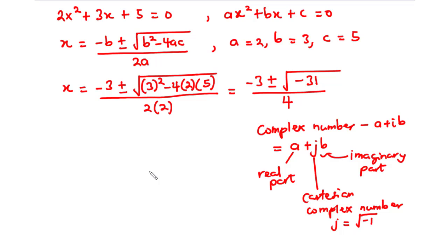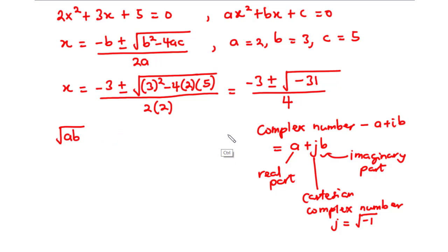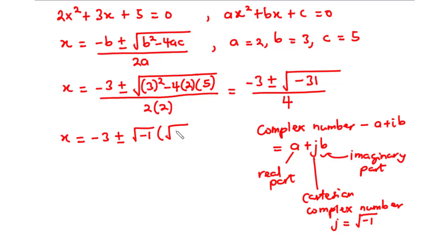From the properties of surds, we know that the square root of a times b equals the square root of a times the square root of b. Applying this property, x equals negative 3 plus or minus the square root of negative 1 times the square root of 31. Because 31 is a prime number, we cannot further simplify, so we have this all over 4.